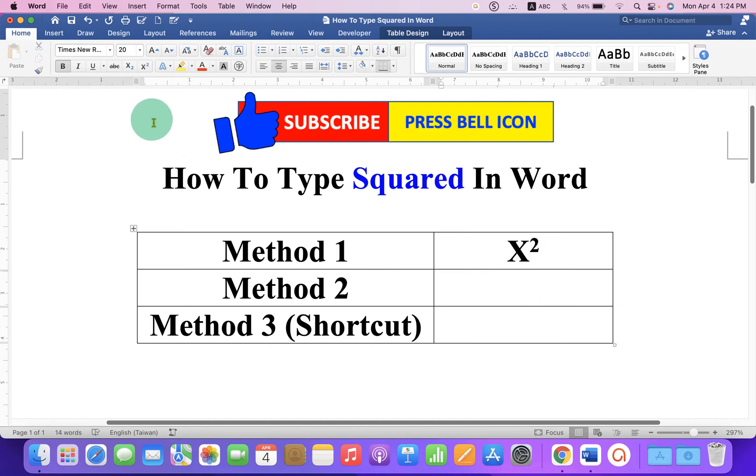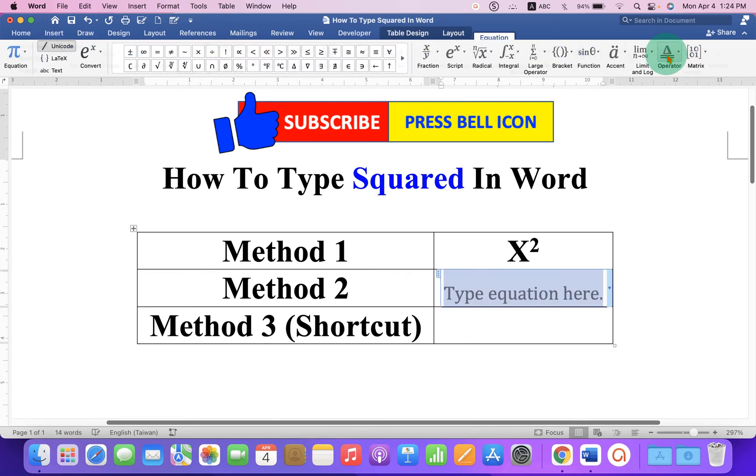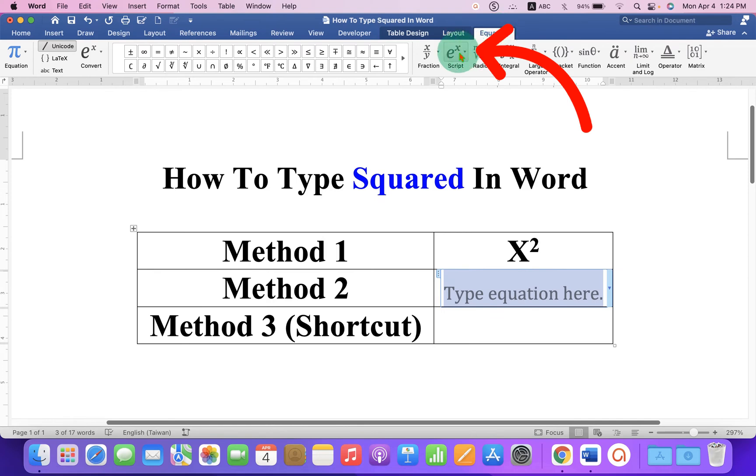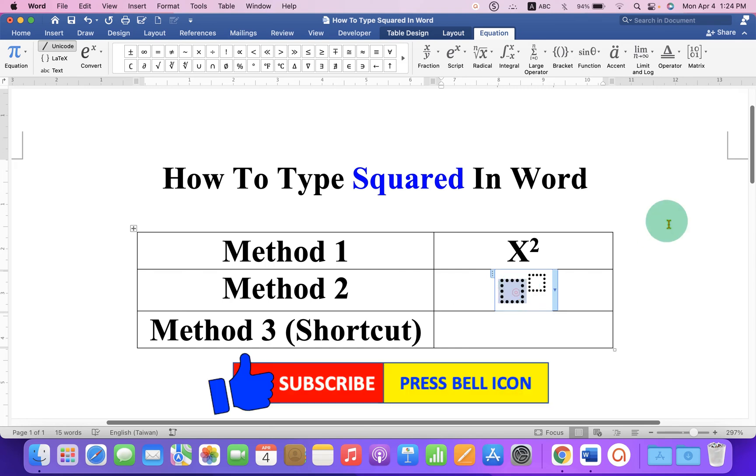The next method is also easy. Click on the Insert tab and you will see the Equation option. After clicking on it, you will see a blue box. Under the equation, select the first option, superscript. In the first box type what you want, and in the next box type the number 2.